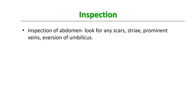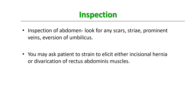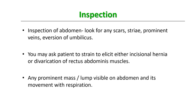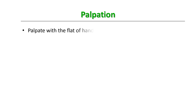Like every examination, begin with the inspection of the abdomen. Look for any visible scars, old striae, prominent veins, eversion of the umbilicus, and check the hernial sites. You may ask the patient to strain to elicit any incisional hernia or divarication of the rectus abdominus muscles due to frequent pregnancies in the past. Look for any prominent mass or lump visible on the abdomen and its movement with respiration.